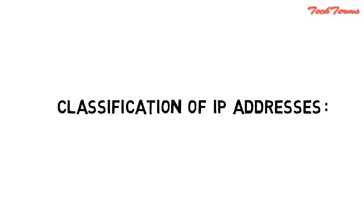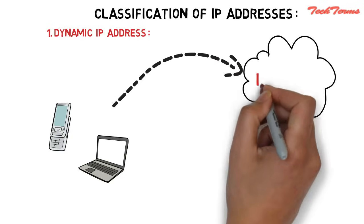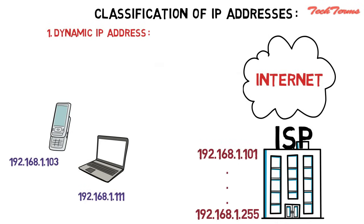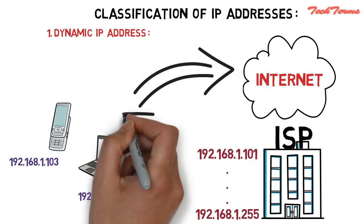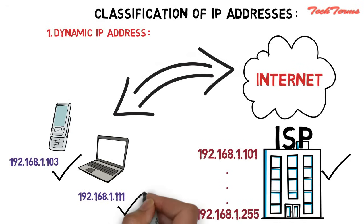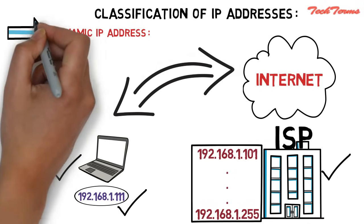IP address can be classified as dynamic IP address and static IP address. When you connect your device like a smartphone or computer to the internet, your Internet service provider provides you an IP address from the range of available IP addresses. Your device then has an IP address, so you can connect to the internet and send and receive data. Next time you connect your device to the internet, your Internet service provider provides you a different IP address from the same available range. Since the IP address keeps on changing every time you connect, such IP addresses are called dynamic IP addresses.